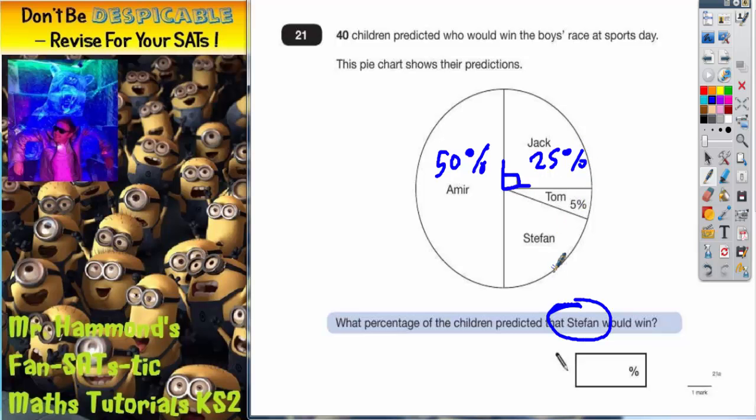5% thought that Tom was going to win. So we've got Stefan left. The trick here is that the whole pie must equal 100%. The total pie chart equals 100%. So let's see what we've got so far. We've got 50, 25 and 5.